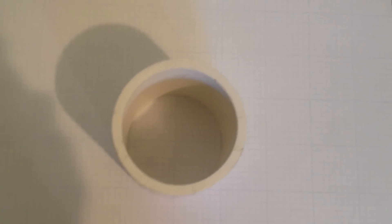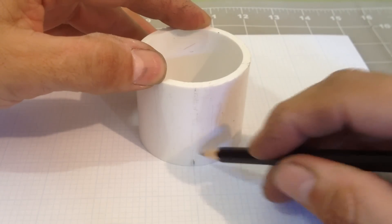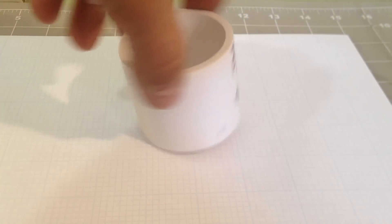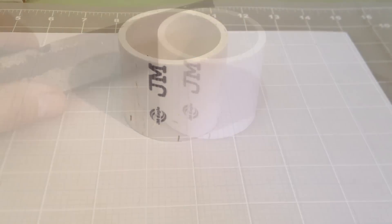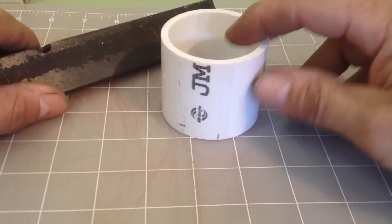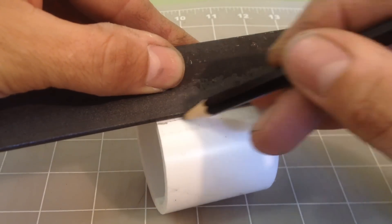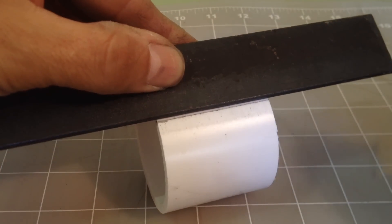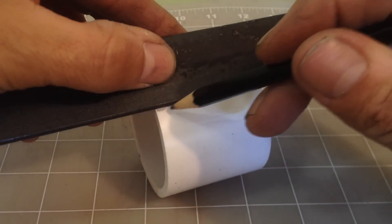Using graph paper I find and mark on exact opposite sides of the 2 inch PVC section. Then using a piece of angle iron I extend the line down the length of the section, and rolling the pipe I do the same on the opposite side.